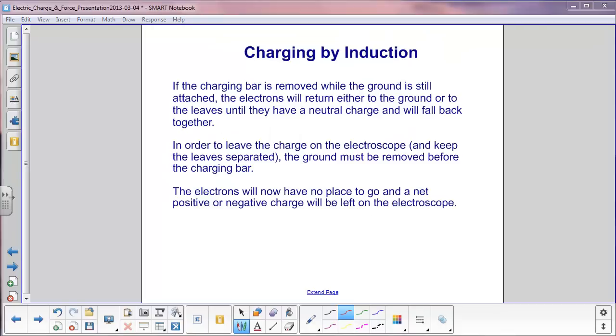If the charging bar is removed while the ground is still attached, the electrons will still have a path to ground. So they can either go down to the ground or come up from the ground. In either case, the electroscope will now be neutral again. The leaves will fall back together.